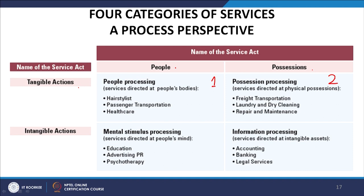When tangible action is taking place on possessions, that becomes possession processing — services directed at physical possessions. For example, freight transportation (unlike passenger transportation), laundry and dry cleaning where you give your clothes to be cleaned, and repair and maintenance of computers, ACs, and automobiles.